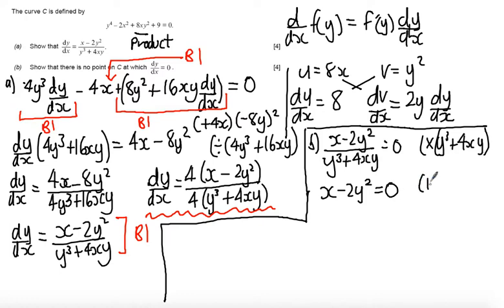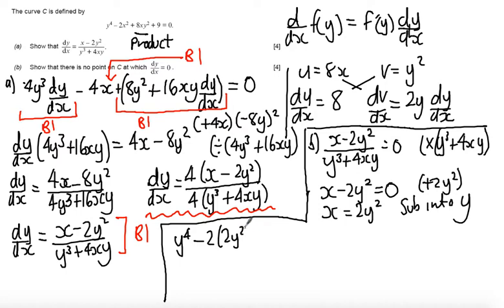Rearranging this equation, so add 2y squared to both sides, we get that x is equal to 2y squared. Now, I'm going to sub this into y. So, sub into my equation y. So, now I get y to the power of 4 minus 2 lots of 2y squared squared plus 8 lots of 2y squared times y squared plus 9 equal to 0. Because I could only get a relationship between x and y for when dy by dx is equal to 0, I then need to substitute this in and solve the simultaneous equation as true because this relationship x equals 2y squared must be true and the relationship of the implicit equation must be true at these stationary points.